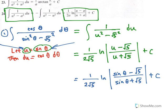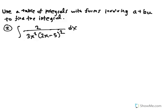That's how you do this problem — we recognized that rule 24 applies along with a u substitution. Our next example: use a table of integrals with forms involving a plus bu to find the integral. We have the indefinite integral of 2 over (3x²(2x minus 5)²) dx.